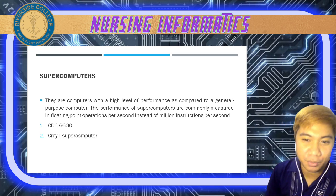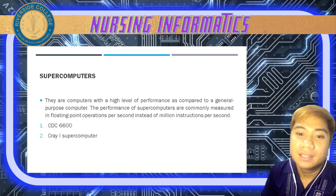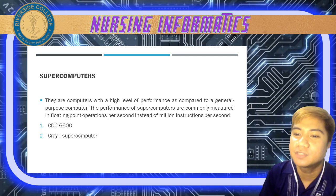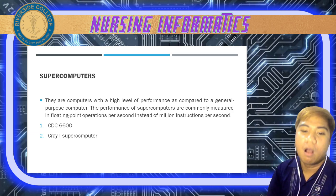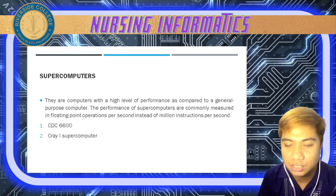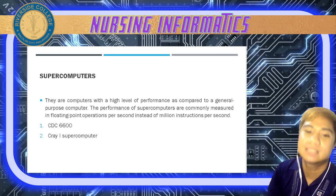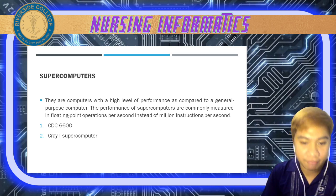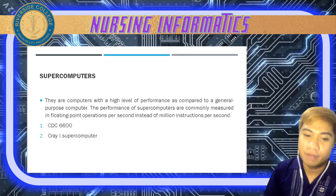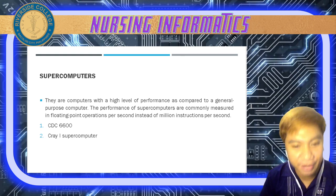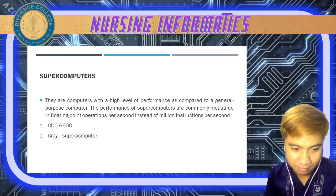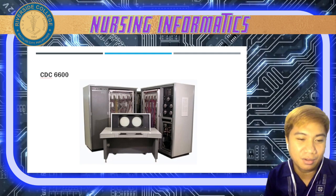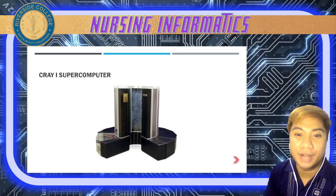We also have supercomputers — computers with a high level of performance compared to a general purpose computer. Their performance is measured in floating point operations per second rather than MIPS. Examples include the CDC 6600 and CRAY 1 supercomputer. The first supercomputer was developed by Seymour Cray, considered the father of supercomputing.